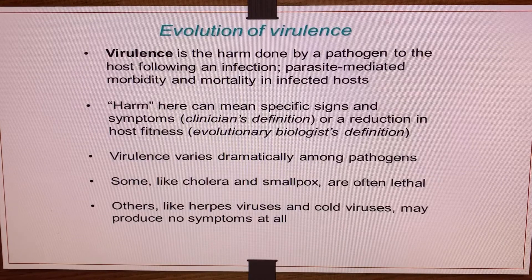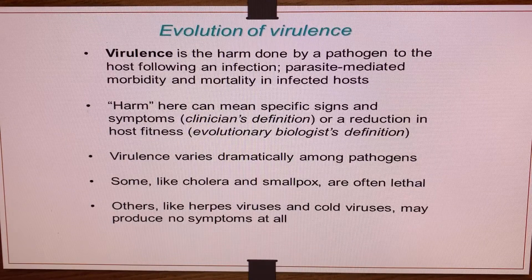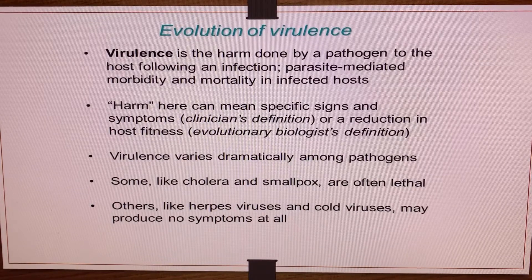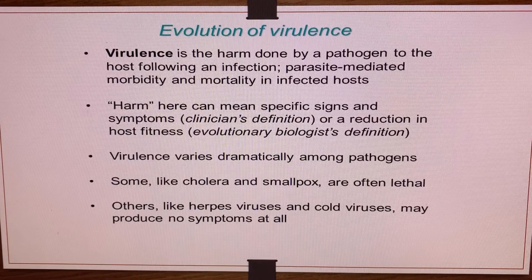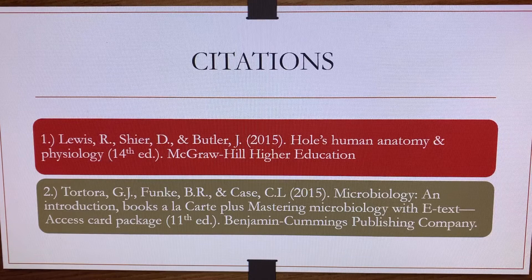Antibiotic resistance occurs when bacteria change in a way that reduces the potency of a drug or chemical designed to eliminate or stop infection. One way that cells can acquire antibiotic resistance is through cell mutations that occur during DNA replication.